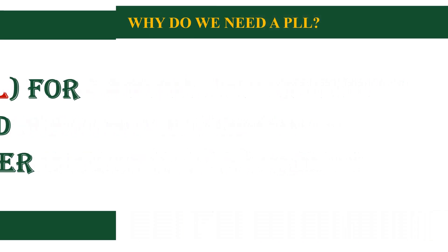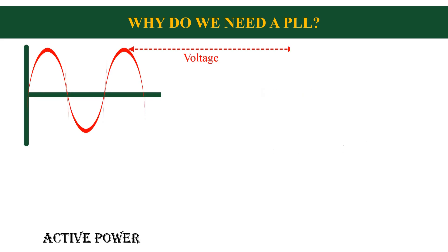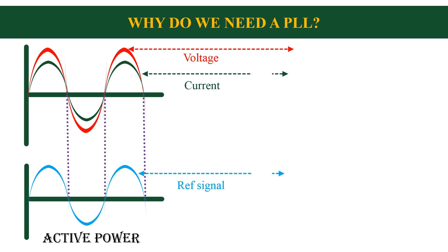Why do we need a PLL? The answer is very simple. Suppose we want to send an active current to the grid. First I will mark the grid side voltage. Now the current which has to be sent should be in phase with this voltage. In order to send this current, we need to generate a reference signal, and that signal should be in phase with the actual voltage.